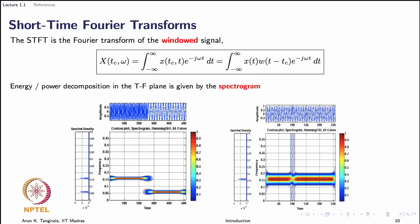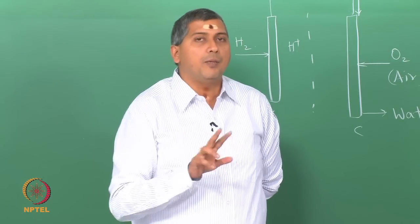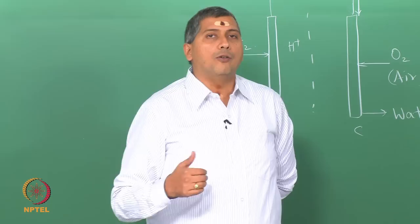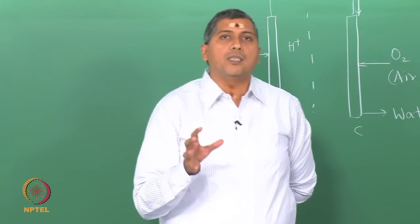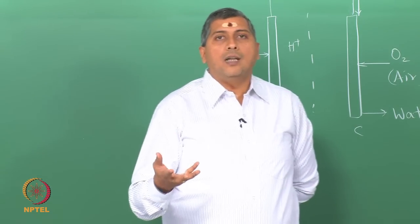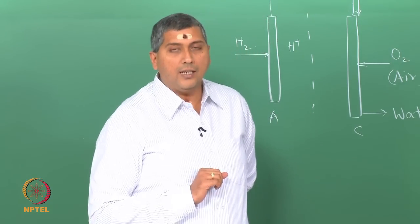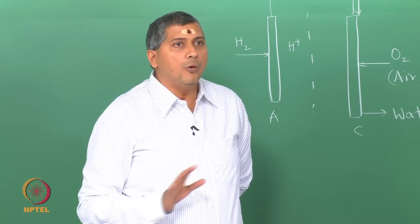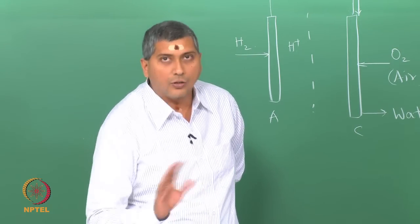The spectrogram is simply computed as the magnitude squared of the short-time Fourier transform. For the same signal we saw earlier, the spectrogram clearly tells me there are two frequencies in the signal located over different time intervals. Fourier analysis tells me simply that there are two frequencies, but the spectrogram is able to get the local information in time. There are certain limitations to this technique, but by and large it is a major improvement over Fourier or spectral analysis.